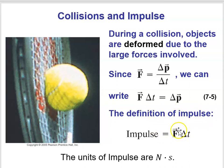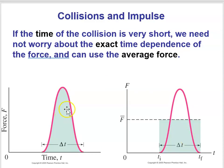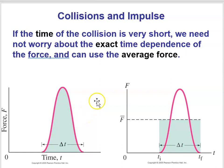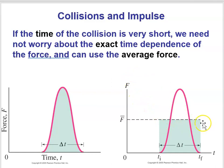The impulse is equal to F times delta T. The units of impulse would be a force times a time, which is newtons times seconds. What we're going to do in a lot of this chapter is assume that the collision occurs over a very short time. If that's the case, we can just approximate the force on the object during the collision as an average force — some constant value.